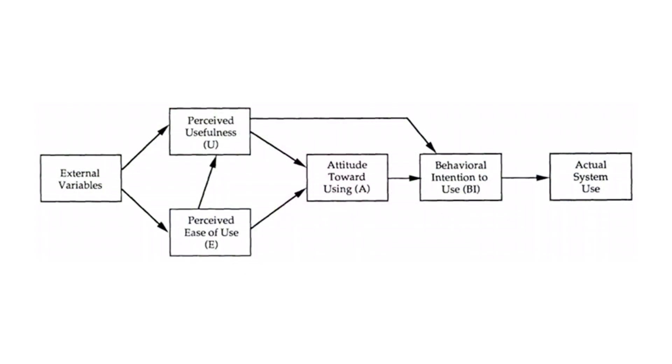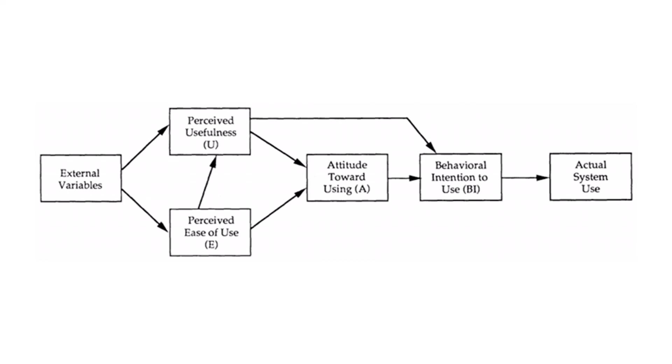TAM was developed by Fred Davis in 1986 and is based on the idea that our attitudes towards technology are shaped by two key factors: perceived usefulness and perceived ease of use. Perceived usefulness refers to the extent to which we believe that using a technology will enhance our performance or achieve our goals, while perceived ease of use refers to the degree to which we believe that using a technology will be effortless and straightforward.